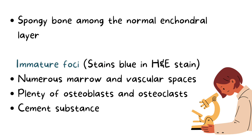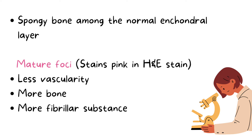On microscopy, spongy bone is found among the normal enchondral layer. In immature foci, which are active lesions, many osteoblasts and osteoclasts and cement lines are seen. These all stain blue on hematoxylin and eosin staining. Whereas the mature foci, which are inactive lesions, show less vascularity, more bone and more fibrillar substance, and these usually stain pink on hematoxylin and eosin staining.